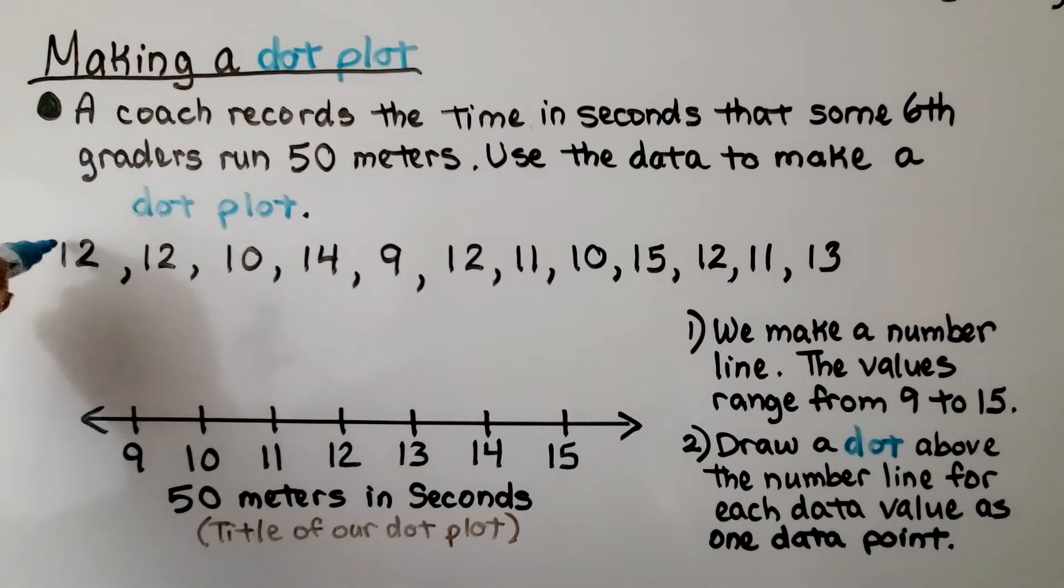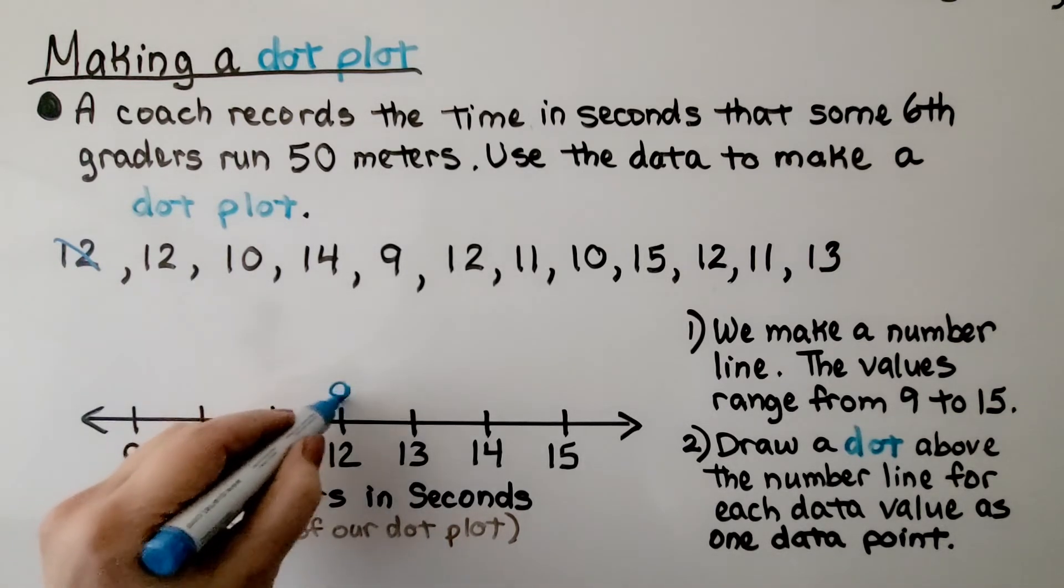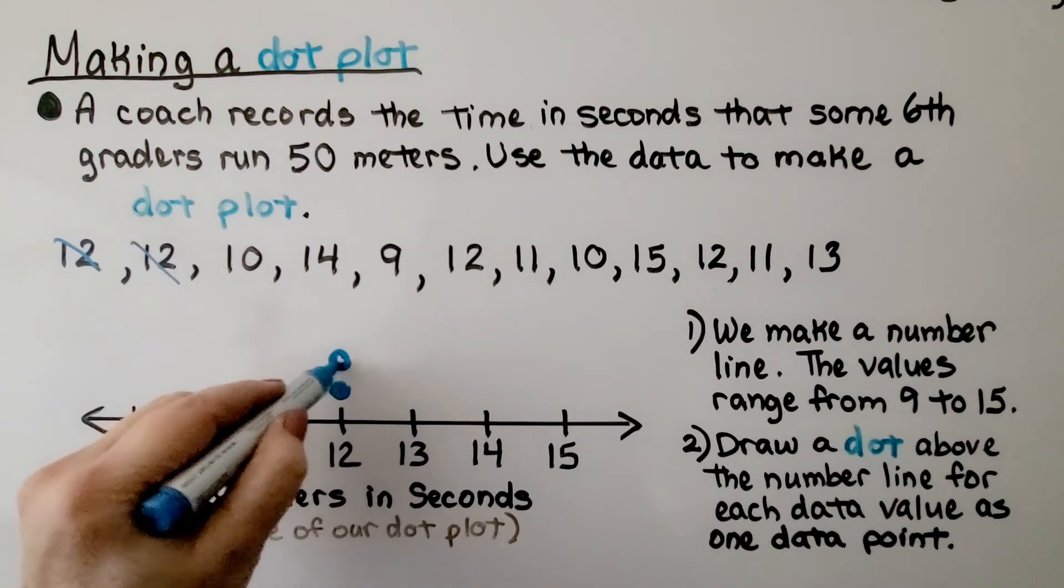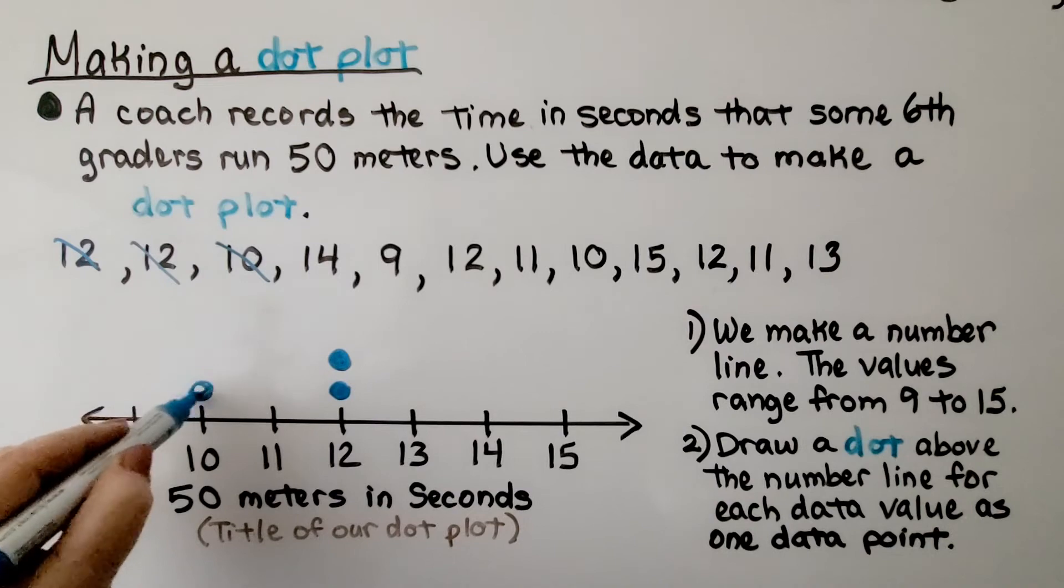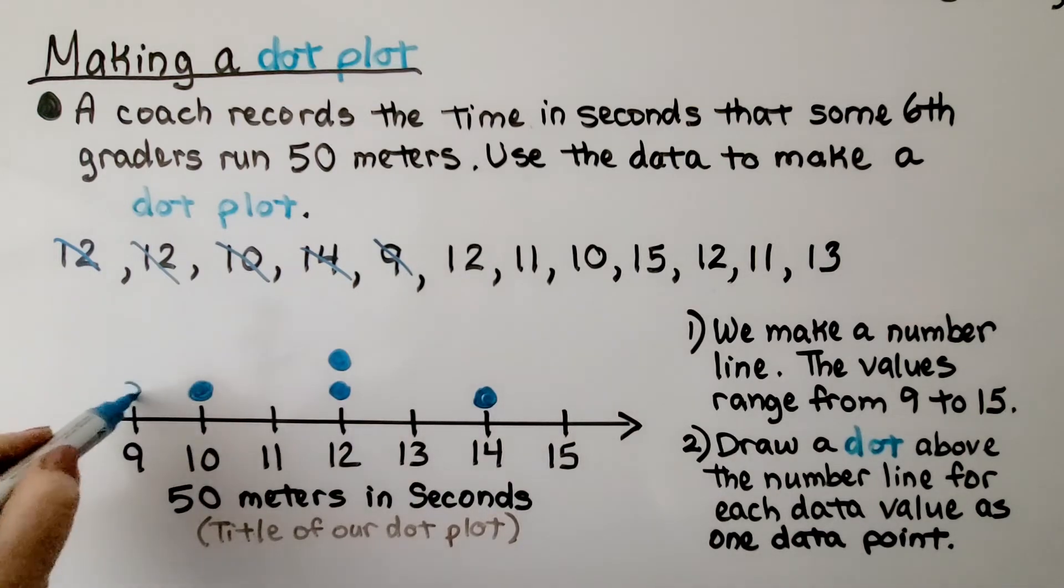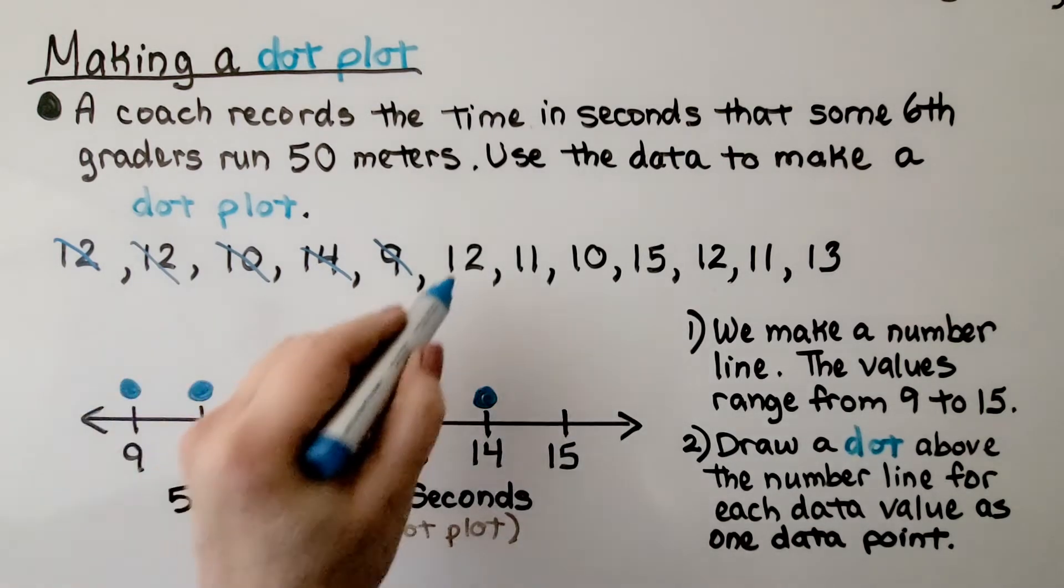We have a 12, so I'm going to cross that off and put a dot for the 12. We have another 12, a 10, a 14, a 9, and another 12.